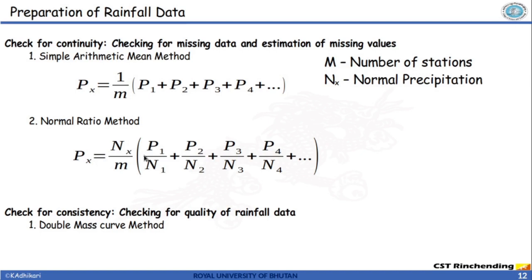Moving on to the preparation of rainfall data. Before starting any analysis with precipitation data, we must check for two things: check for continuity and check for consistency. Continuity means checking for missing data. If there are missing data in the series, we must apply one of two techniques: the simple arithmetic mean method or the normal ratio method. Simple arithmetic mean method is just taking the average, whereas the normal ratio method divides by the normal precipitation. Consistency means checking for the quality of rainfall data, done through a curve known as the double mass curve.